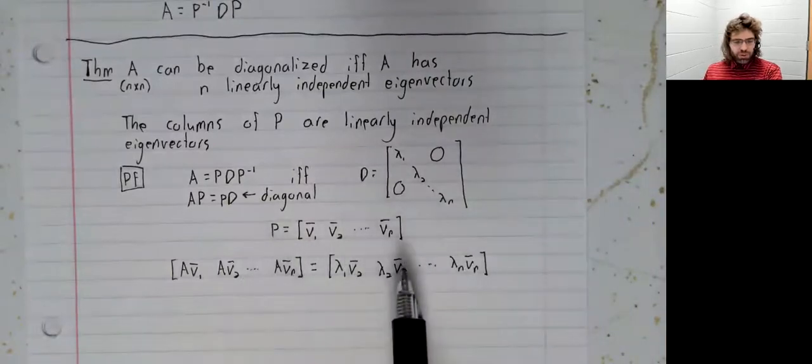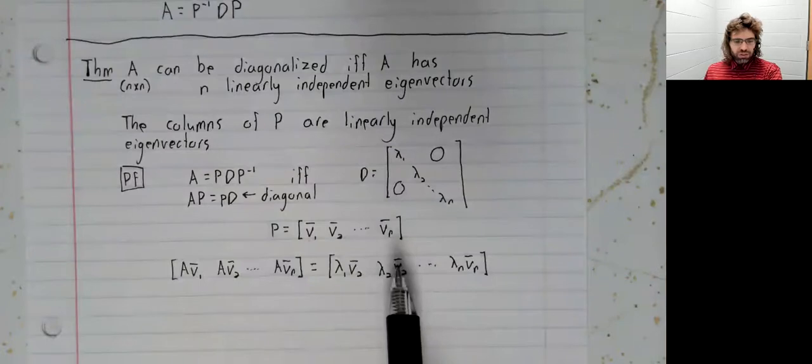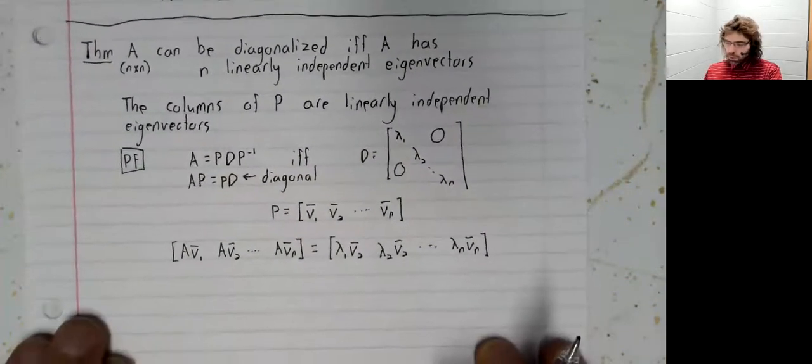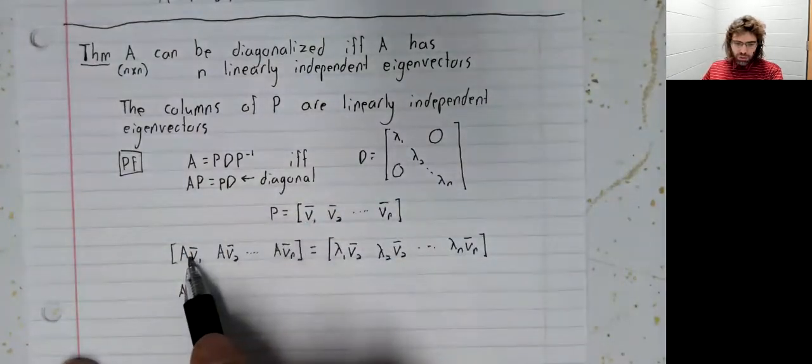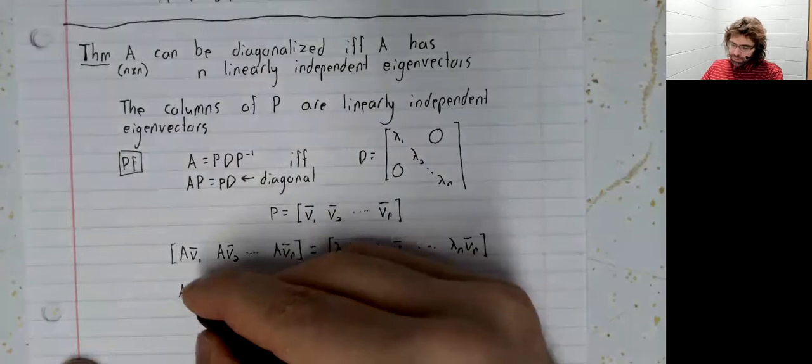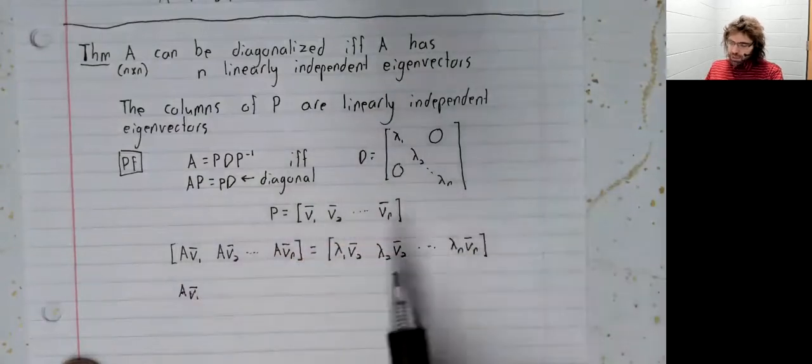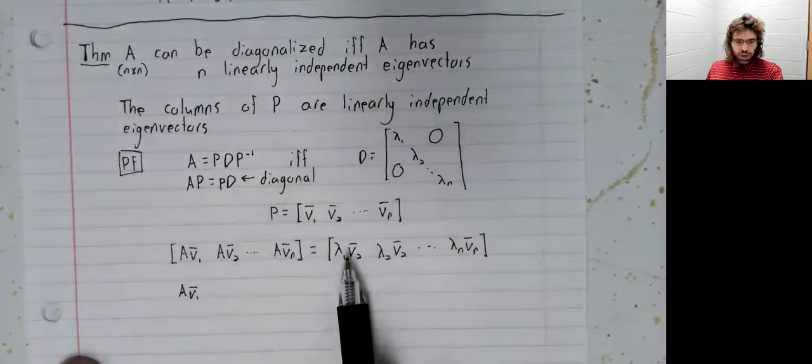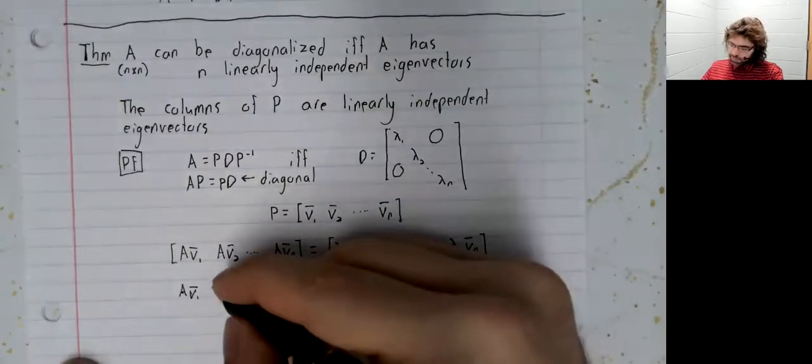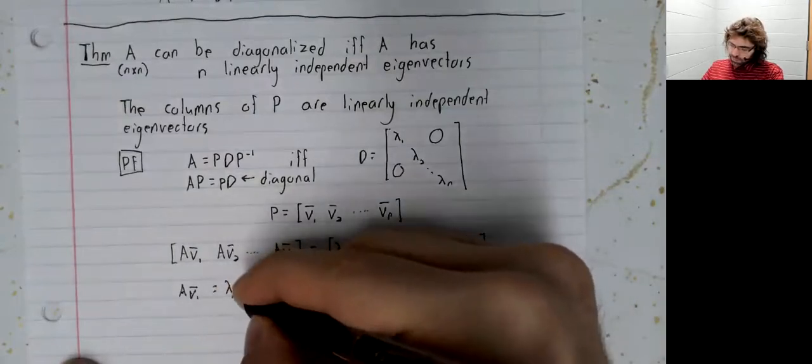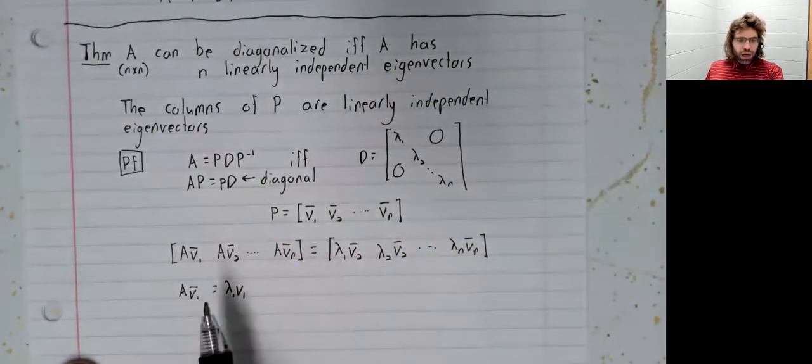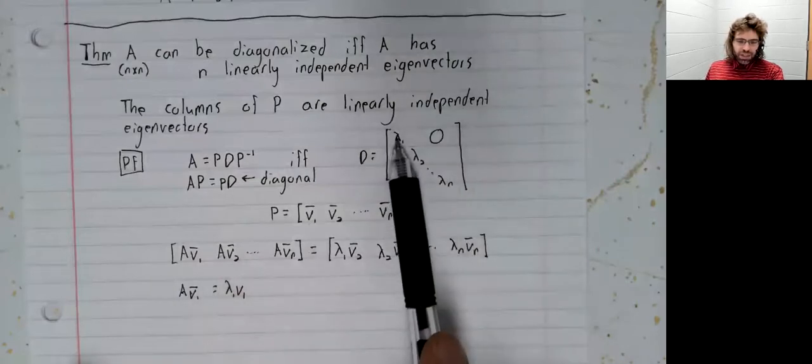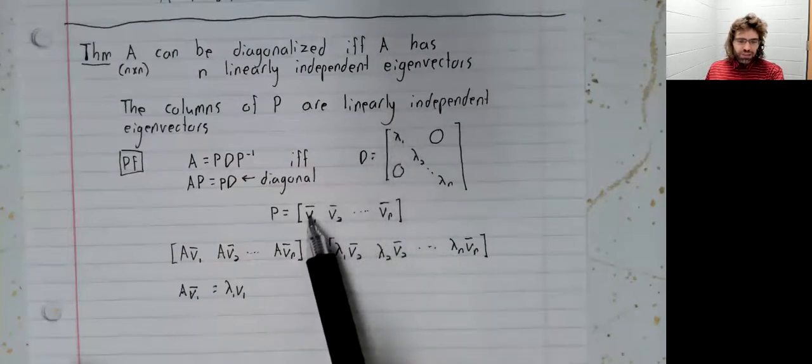One matrix equals another matrix if its columns are equal. And setting the first column here equal to the first column here. Well, this is an eigenvalue eigenvector condition. Lambda one is an eigenvector. V one is an, sorry.